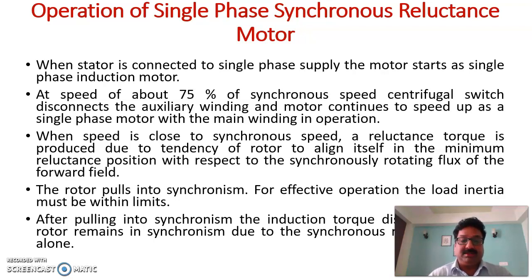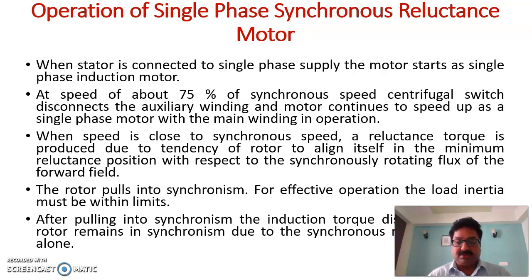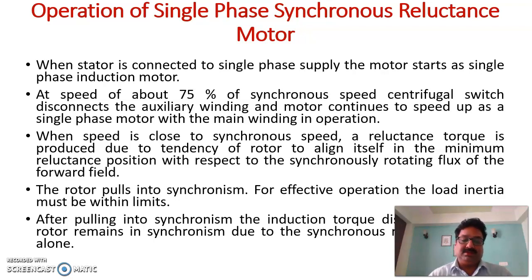Overall, the rotor pulls into synchronism. Effective operation requires that the load inertia be kept within limits. When the machine reaches synchronous speed and engages with the rotating flux operating at synchronous speed, the machine starts operating at synchronous speed. After pulling into synchronism, the induction torque — which was available to accelerate the machine from zero to 75 percent and towards synchronous speed — disappears, and the rotor remains operating at synchronous speed due to the synchronous reluctance torque.